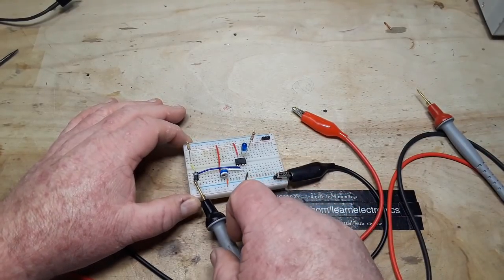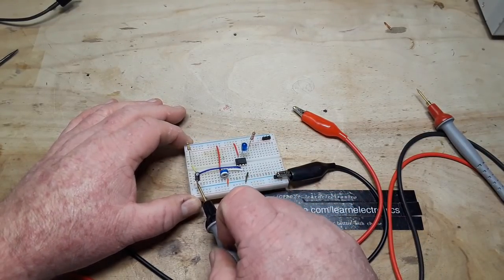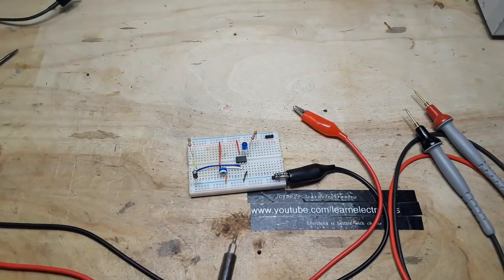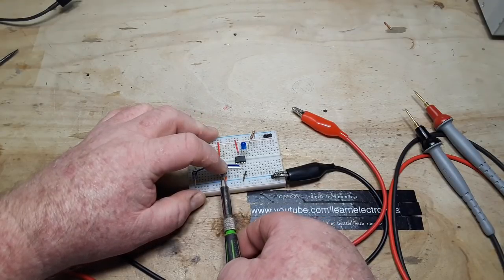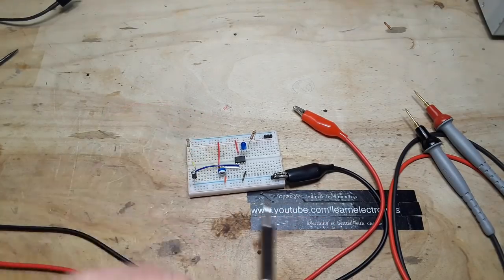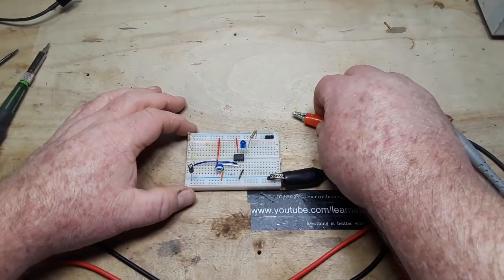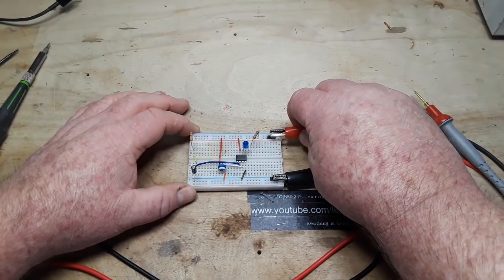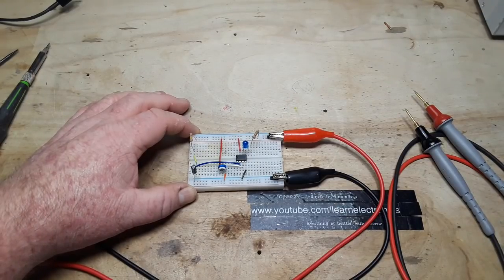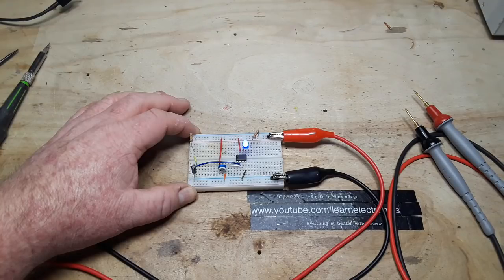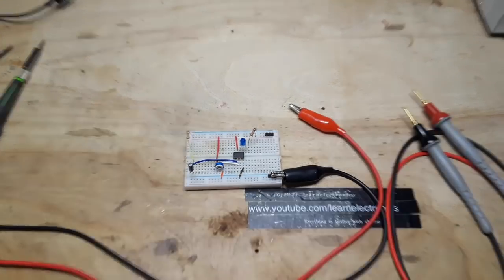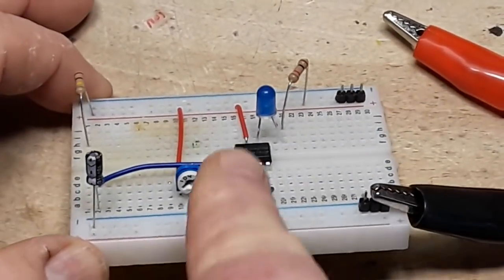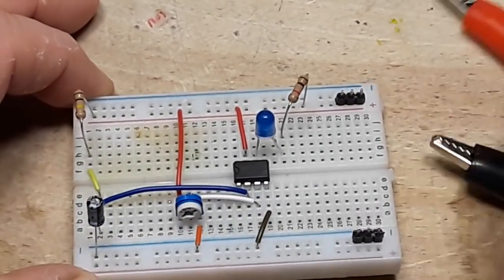Again, we're going to discharge the capacitor. And now, I'm going to change the reference value. One, two, three. Get ready with your timers. One, two, three. There you go. How long did it take that time? You see the effect of changing the reference value to how long it takes for the timer to go off.